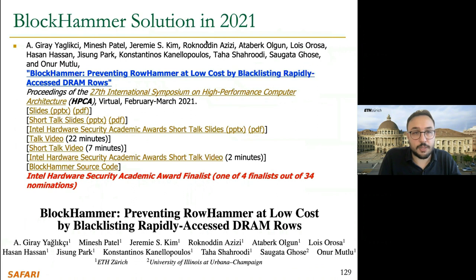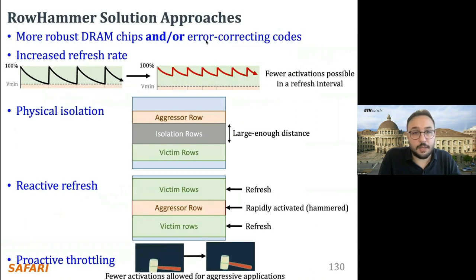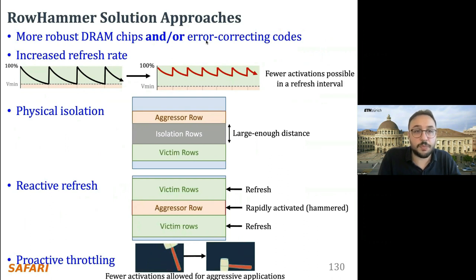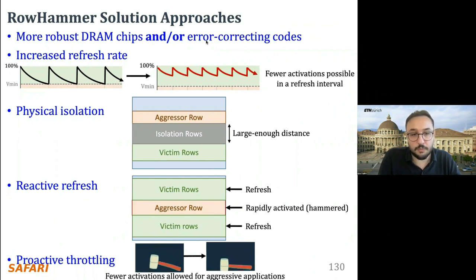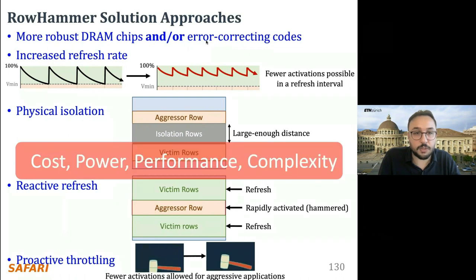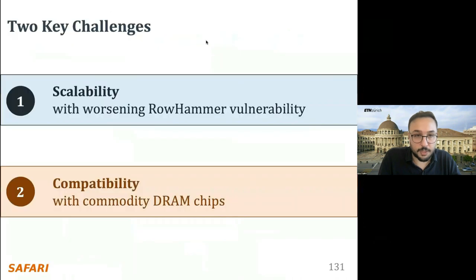We also looked at new RowHammer solutions. BlockHammer is published at HPCA 2021 and classifies RowHammer solution approaches into five categories: more robust DRAM with error-correcting codes; increasing the refresh rate; physical isolation; preventively refreshing victim rows; and proactive throttling. All these approaches come with trade-offs of cost, power, performance, and complexity. We identify two main challenges: scalability to worsening RowHammer vulnerability, and compatibility with commodity DRAM chips.